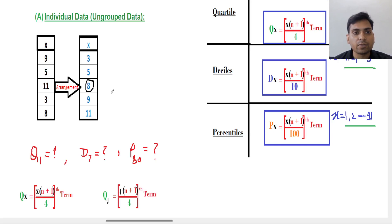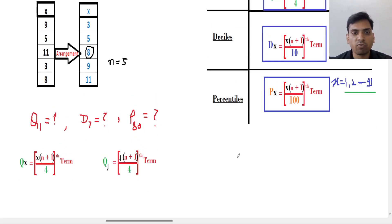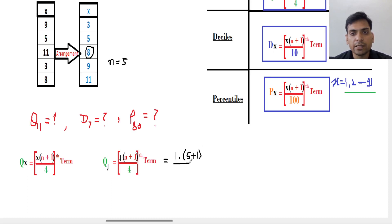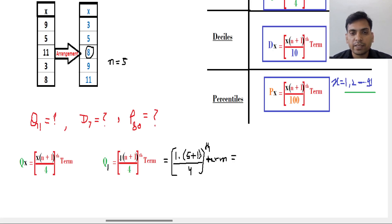This is individual type of data arranged in ascending order and there are five terms, so n = 5. Now we will put this 5 in the formula. This gives us 1 × (5 + 1) / 4, which is 6/4 = 1.5. So the result is the 1.5th term.